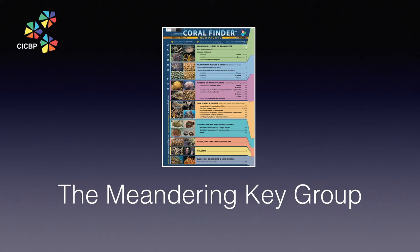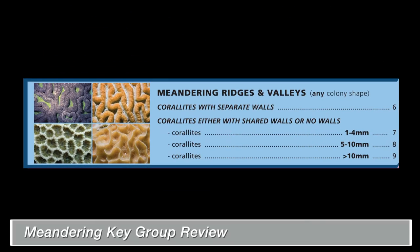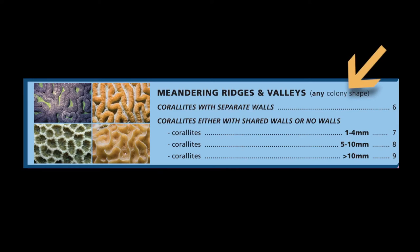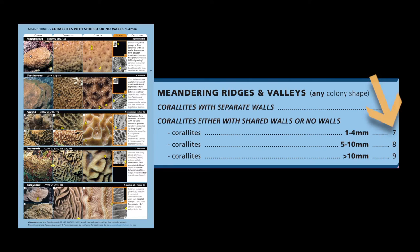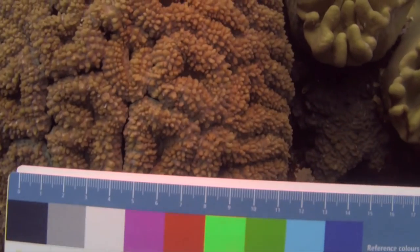Now let's go back to the key page and review the meandering key group logic. Firstly, the meandering key group deals with any wavy, river-like texture found on a coral, regardless of growth form. You then need to ask yourself: does the coral have separate walls, or shared or no walls, at three different scales? When you choose the shared/no walls option, you can be looking at corals with ornamental ridges and no obvious wall structure. Most of the corals like this also have coralites that are very small, and you will find them all together on page seven of the Coral Finder. When identifying corals, remember to measure your coralites and check the scale.